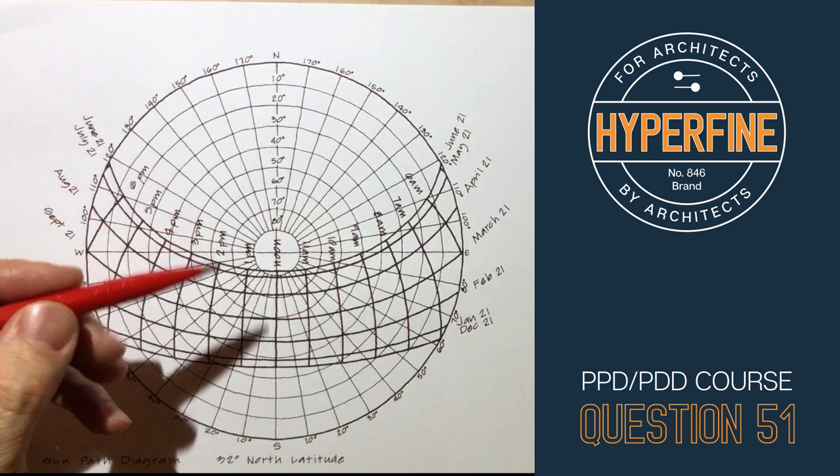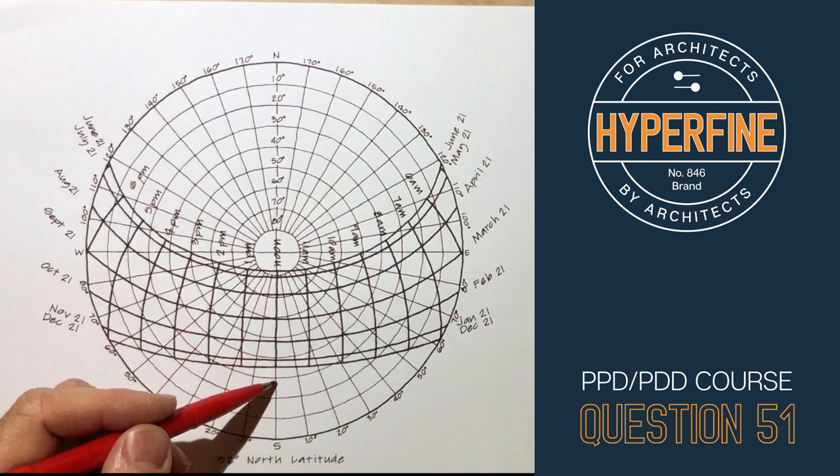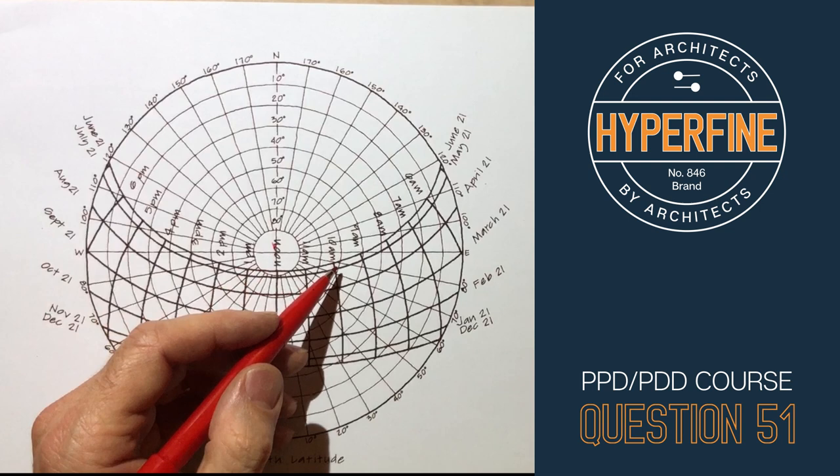If you're ever confronted with a chart or something that you don't maybe understand, try to look for one thing that you know for certain, and so one thing we know for certain about the Sun is that at noon or midday it's directly south, and so you can see that says noon and it's going straight south.